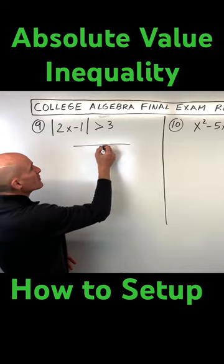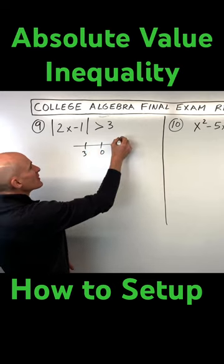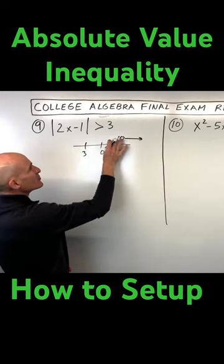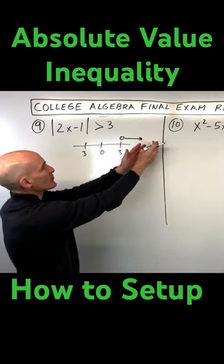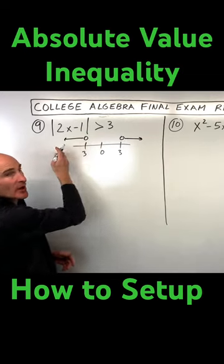So if you were greater than three units from zero, what you could think about is greater than means you'd have to be three units or further, actually further than three units, or further than three units this way.